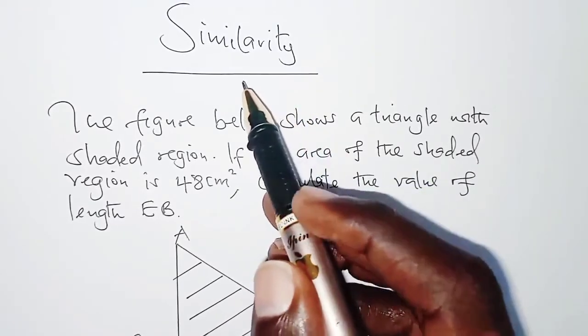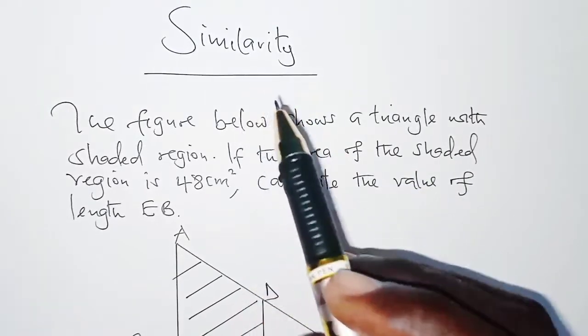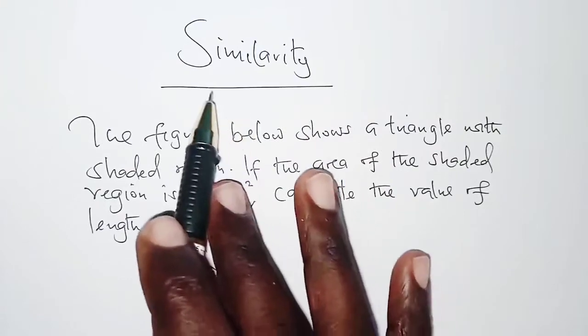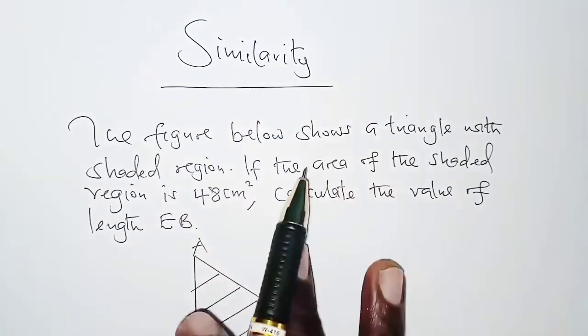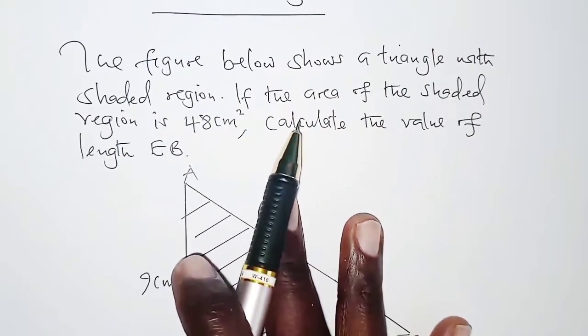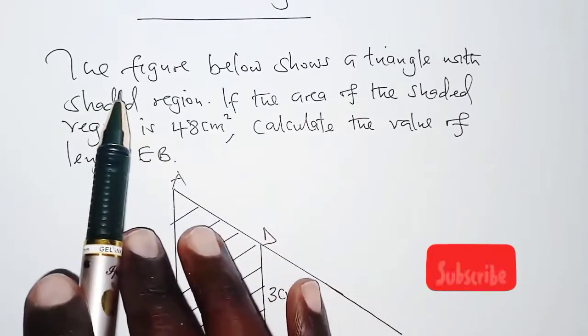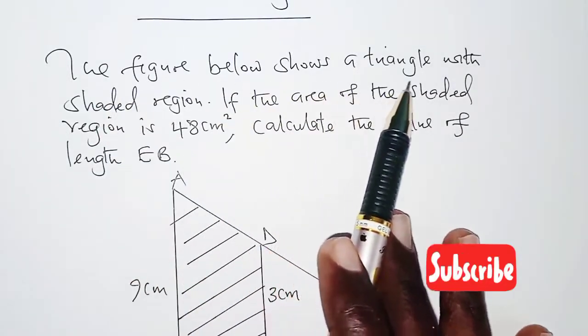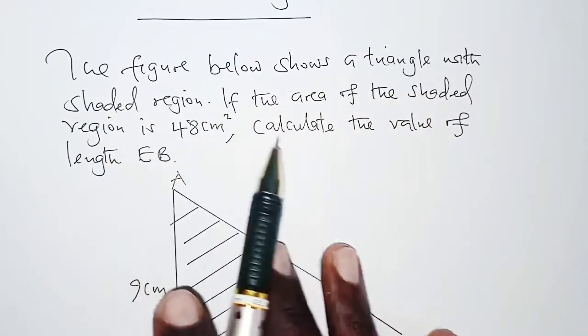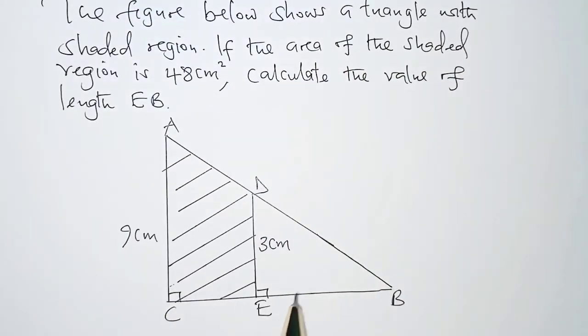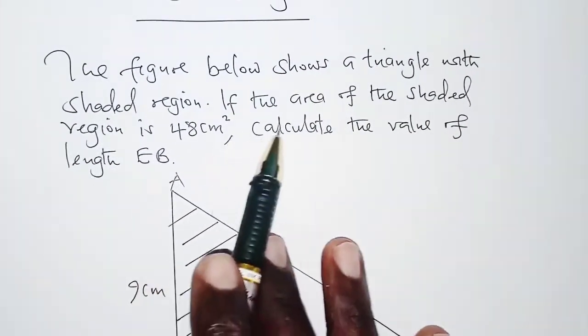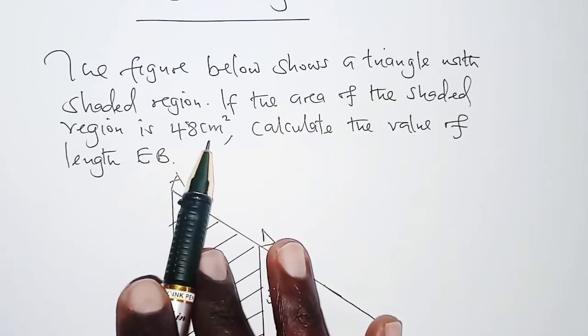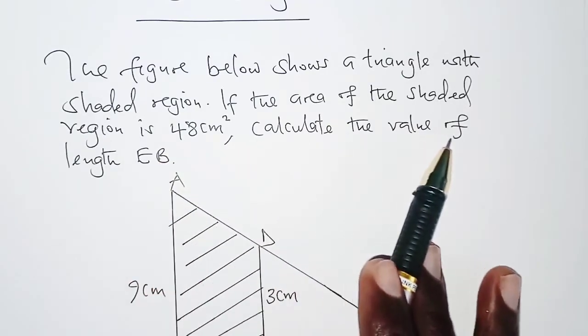Hello dear viewer, welcome to today's presentation. In today's lesson we are going to talk about similarity. The question we are going to use here is: the figure below shows a triangle with the shaded region. If the area of the shaded region is 48 square centimeters, calculate the value of length EB.